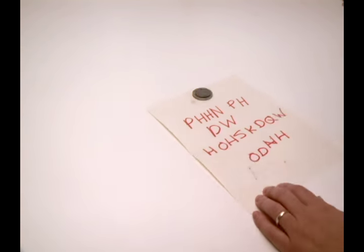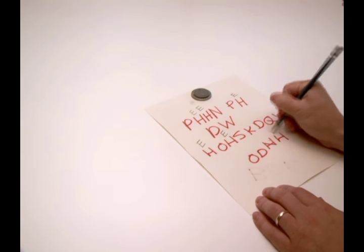Then Bob simply subtracts the shift of 3 from each letter in order to read the original message.